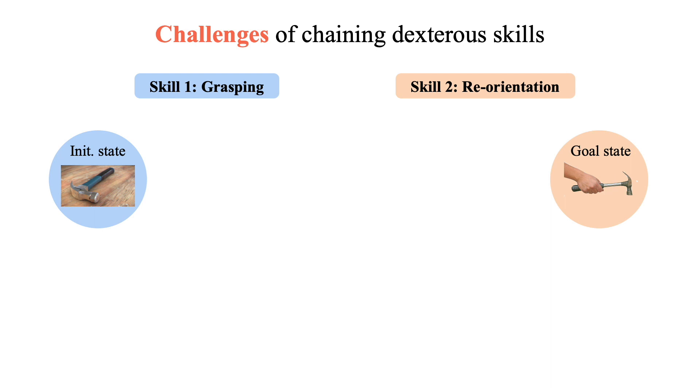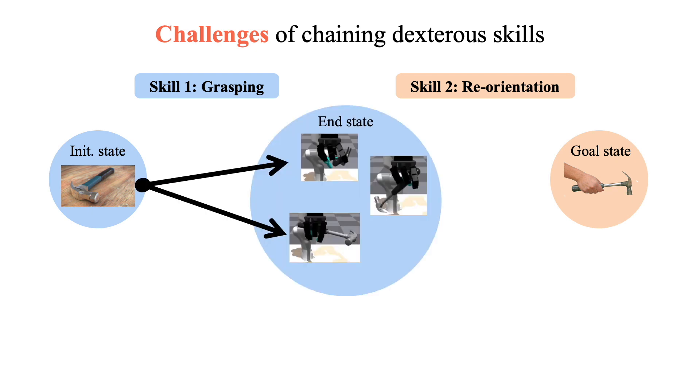This result highlights the inherent difficulties in chaining dexterous skills. Given an initial state and a task goal, the first skill results in a broad end-state distribution, with the object held in various in-hand poses.